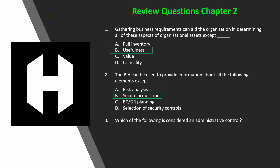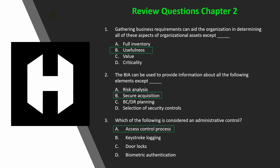Question 3: Which of the following is considered an administrative control? A) access control process, B) keystroke logging, C) door locks, or D) biometric authentication. If you said A, access control process, you would be right — that is an administrative control.